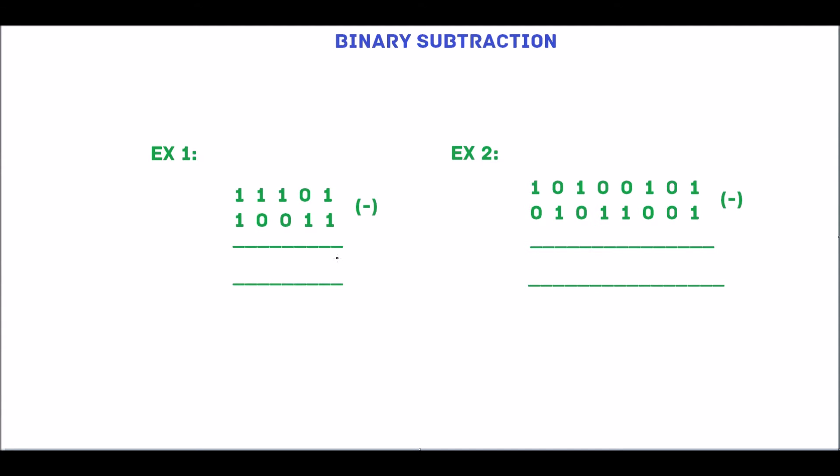Start with rightmost digits, which are 1, 1. 1 minus 1 is 0. 0 minus 1.